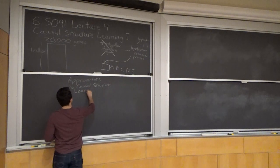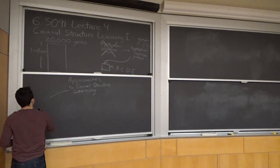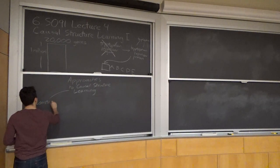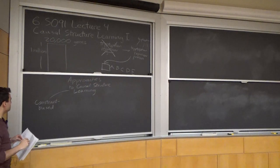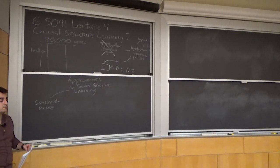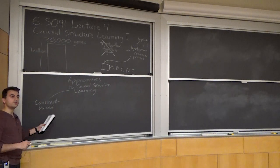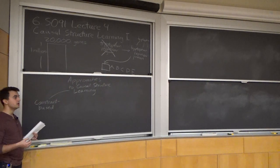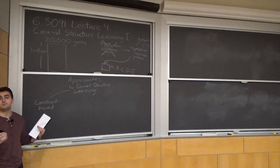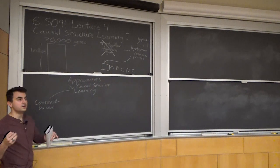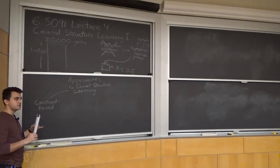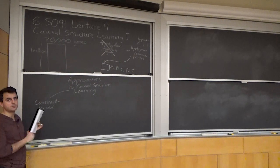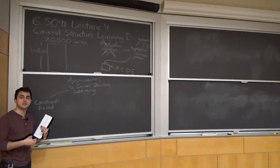The main division people usually make is between constraint-based methods and score-based methods. Constraint-based methods work as follows: a causal model implies some conditional independence constraints on the data. The idea is to look at the data, see what constraints you can pin down — say, A is conditionally independent of B given S — and use some assumptions to transport those conditional independence statements in the data back to D-separation statements in the graph. Those place constraints on what edges can and cannot be present.